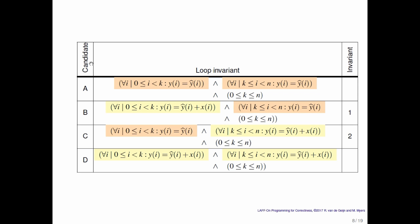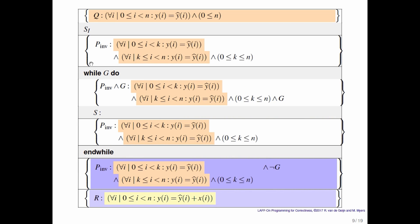The first k entries have been updated, and the remainder of the entries have been updated. That's probably not a particularly interesting loop invariant either, because as you execute the loop, everything is already done.